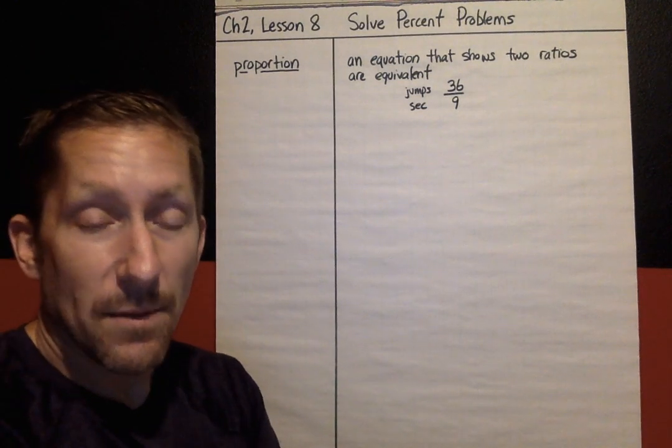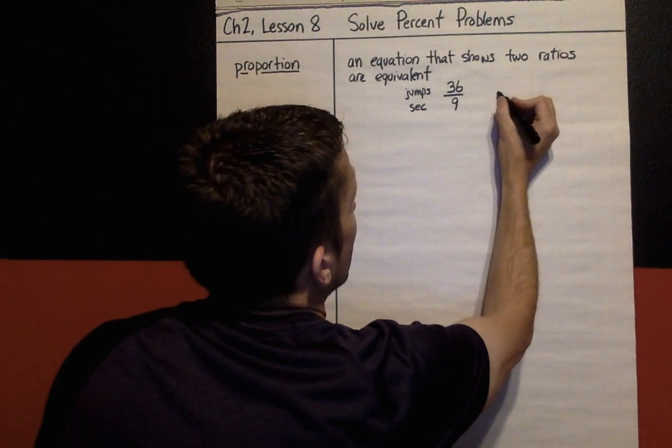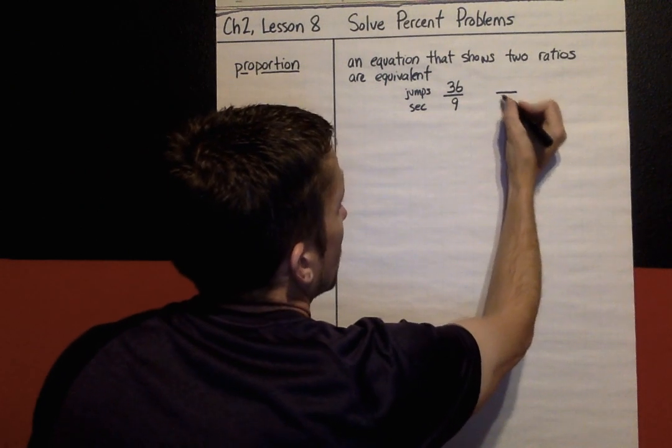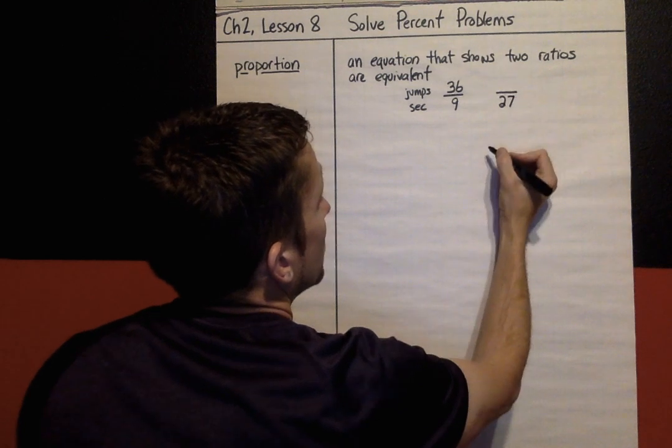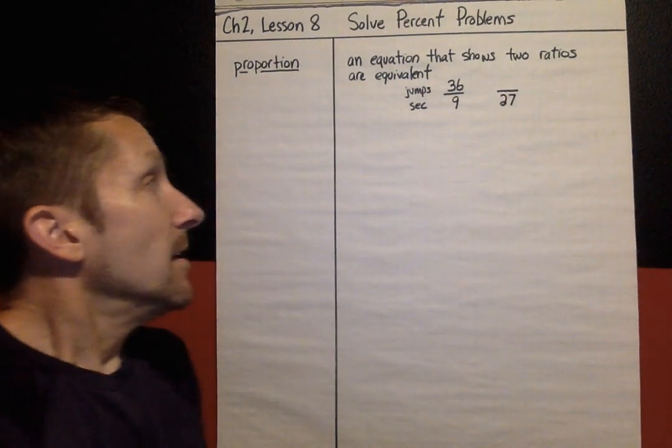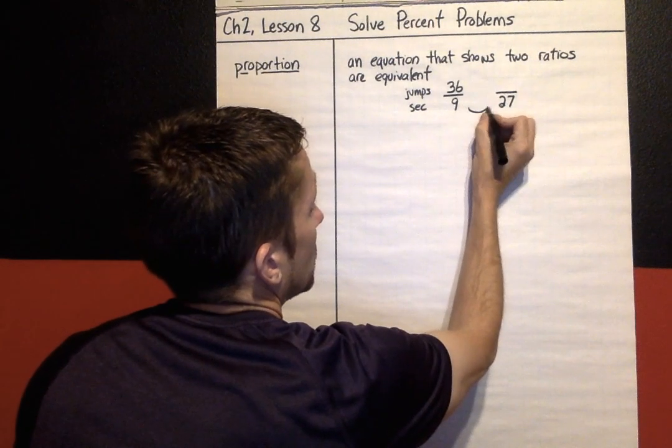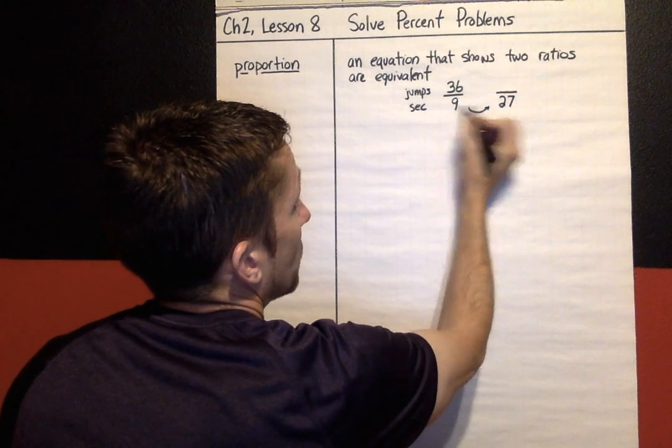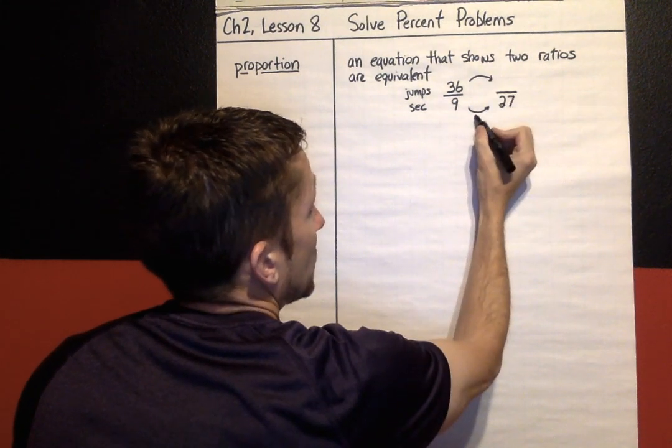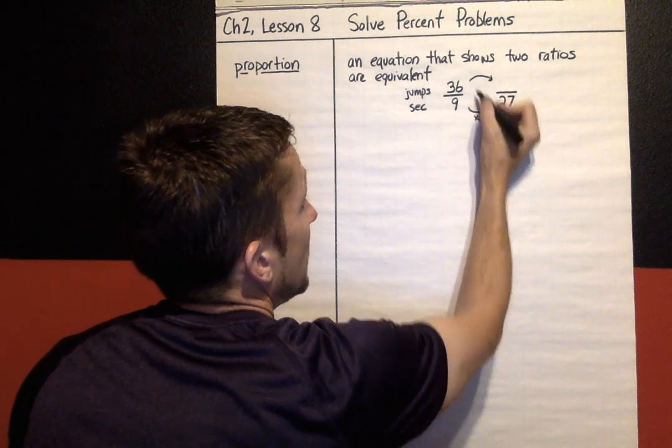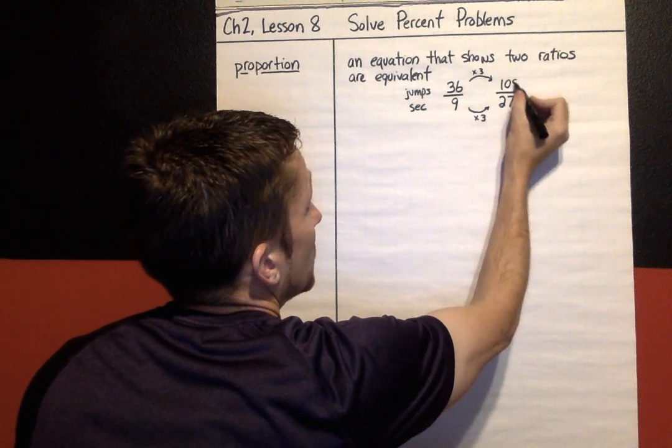And this problem had you figure out how many jumps could that jump team make in 27 seconds. If you remember how to solve this problem, it was all about these arrows, okay? How did we go from 9 to get to 27? And that turns out to be times 3. And we have to do times 3 here as well. That is 108.